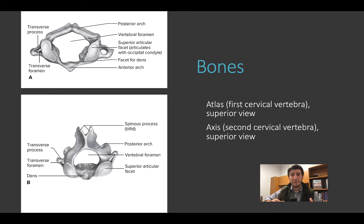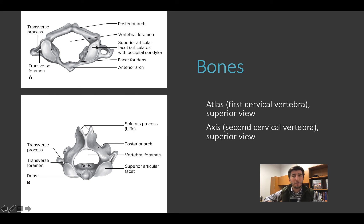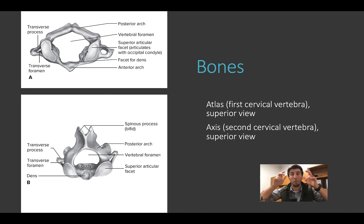Here is the atlas and the axis - our first and second cervical vertebrae. Atlas up top, axis down on the bottom. What you're going to see across the next several slides as we're talking about vertebrae is that most of them are going to have very similar attributes. They're going to have vertebral foramens, transverse processes, and most vertebrae are also going to have spinous processes. The atlas and axis don't. If you look at the atlas, it actually has these superior articular facets, which allow for the occipital bone of the skull to sit down onto it, and allow for rotation and movement to occur at this joint with the skull on top of the atlas.